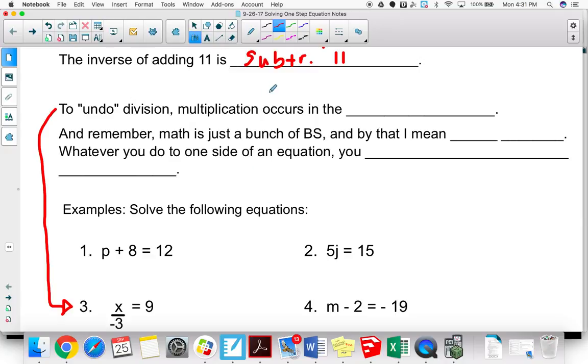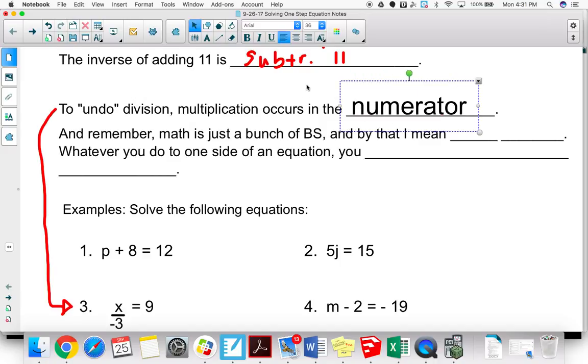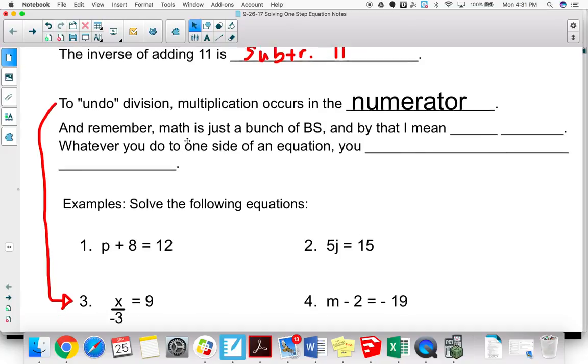So to undo division, make sure that when we're using multiplication, it goes in the numerator. And I'll give you an example here in just a minute to talk about that.